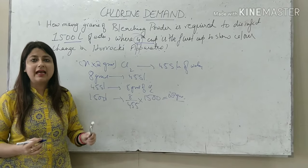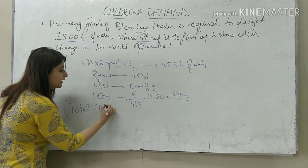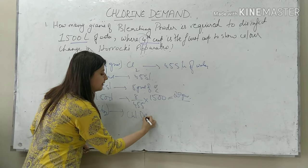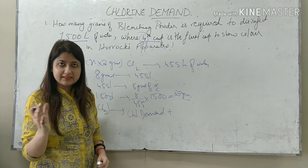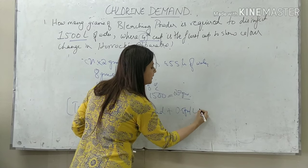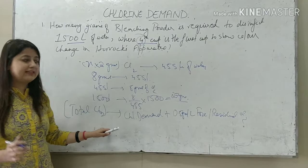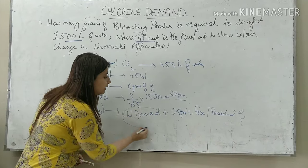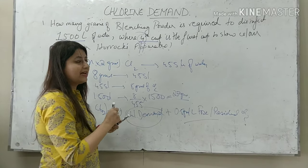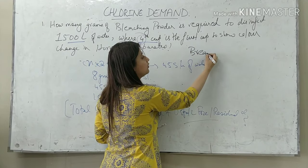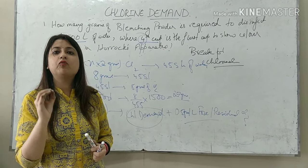The question that arises is: what is the total amount of chlorine that should be added? It is the chlorine demand plus 0.5 milligrams per litre of free residual chlorine that should be present in drinking water. So total chlorine = chlorine demand + free residual chlorine. Break point chlorination is the point when the chlorine demand of water is fully met.